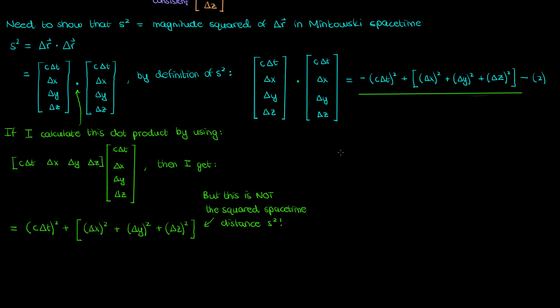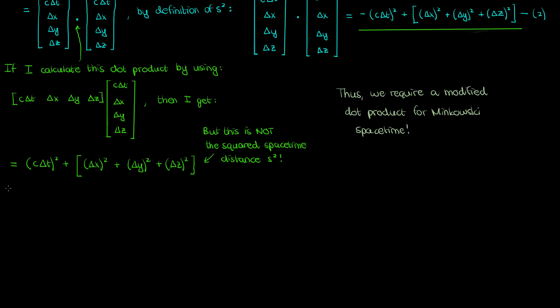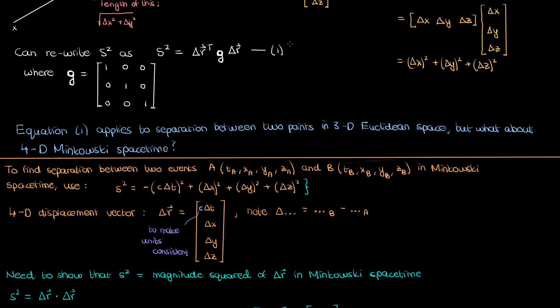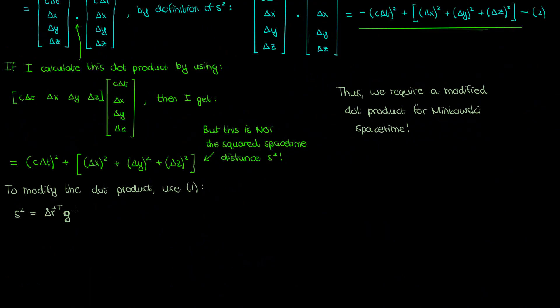The distance squared in Minkowski spacetime has a negative sign in front of the time separation and a positive sign in front of the spatial separations. But when we use the simple dot product, we get a positive sign in front of everything. So if I want the magnitude squared of delta r to equal the standard distance in Minkowski spacetime, I can't just use the simple dot product — I need a modified dot product with a negative sign for the first term and positive signs for the other three terms. Let me bring back equation one, which had the matrix G in between the transpose of delta r and delta r itself.